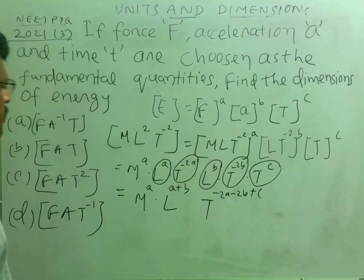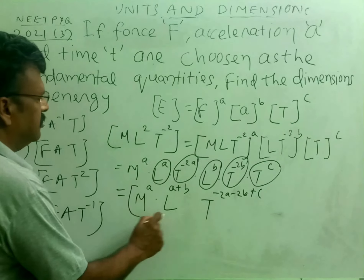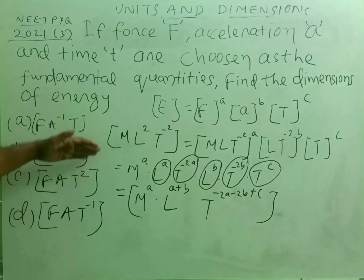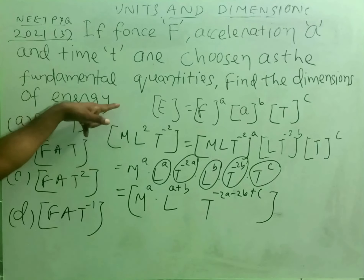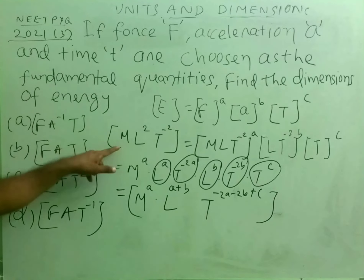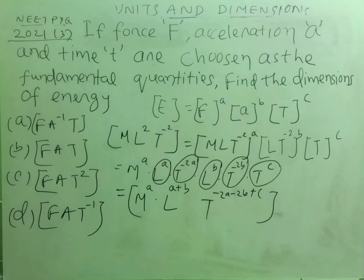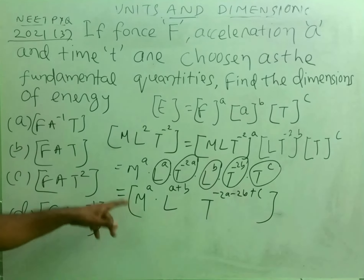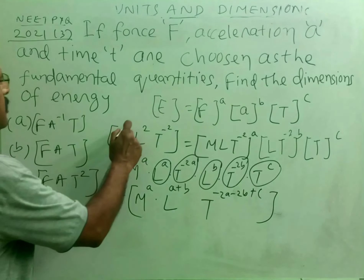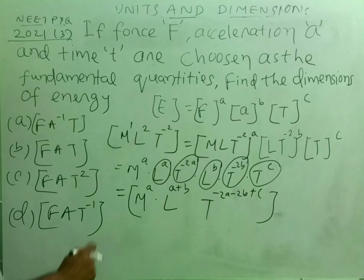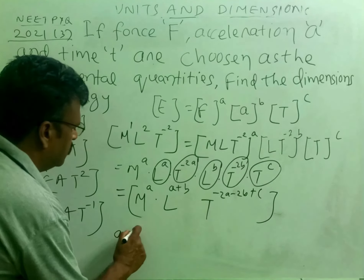From the principle of homogeneity of dimensions, the exponents of the dimensions on the left-hand side must be equal to the exponents on the right-hand side. The exponent of M on the left is 1, so it must equal the exponent of M on the right — therefore a is equal to 1.